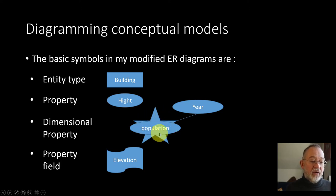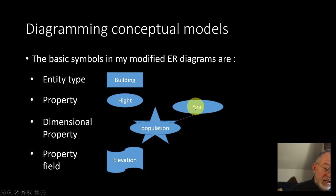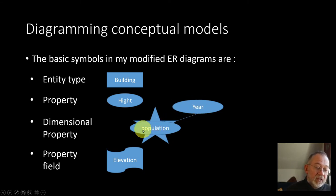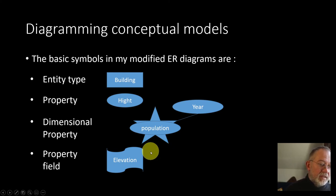If you have population over different years, you can see this is a combination — a year that defines the star. So if we had a dataset showing the entity of Copenhagen municipality, with population for the year 2000, 2010, and 2020, we would use this star diagram with the property and the year. This is typically used for spatial-temporal data. Finally, if we have information stored as property fields, we use a different notation for that.